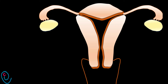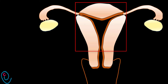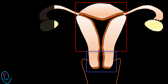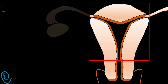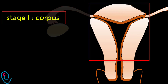The uterus is formed of corpus and cervix. Stage 1 is confined to the corpus. When the tumor involves the endometrium or up to 50% of the myometrium, it is called Stage 1A.